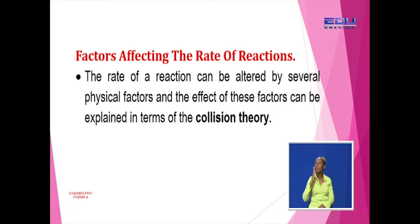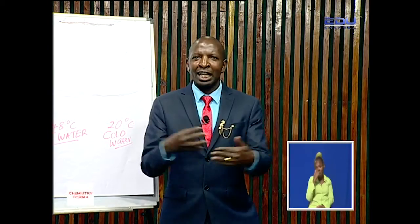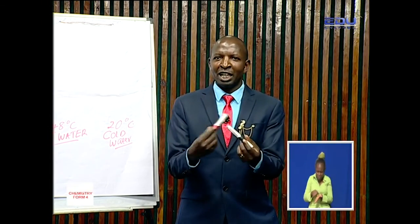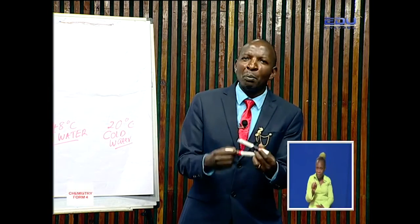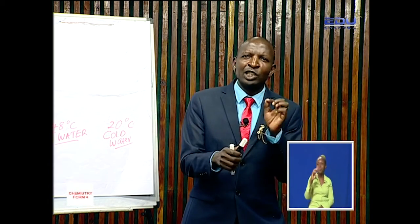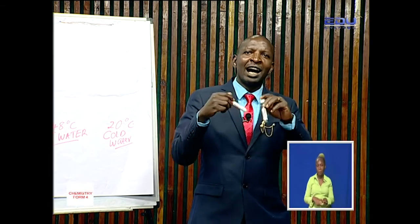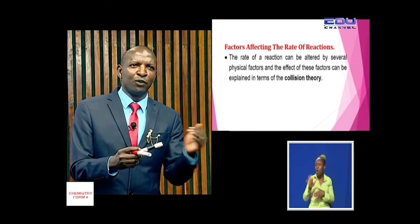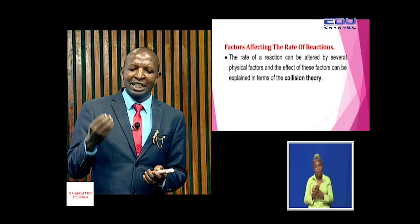Now let's look at the factors affecting the rate of reaction. The rate of reaction can be altered by several physical factors, and the effect of these factors can be explained in terms of collision theory. For a reaction to take place, the particles — atoms of an element that are reacting — have to collide. When they collide, they are able to react to form a compound. When a collision leads to the formation of a product, that is what you call a fruitful, effective, or successful collision. But not all collisions are fruitful — not all collisions will lead to the formation of a product. That's why the rate of reaction can be explained in terms of collision theory.